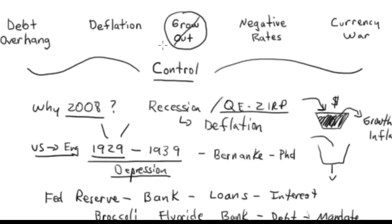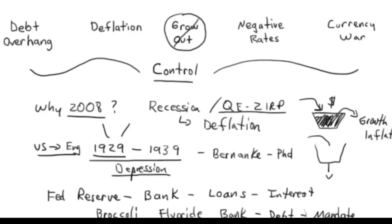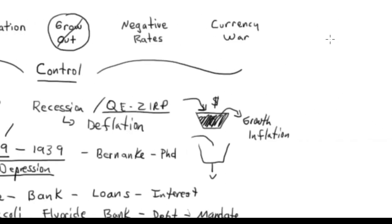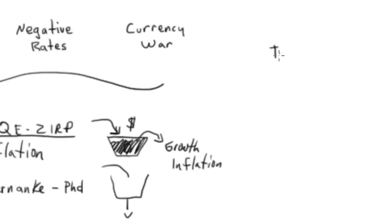So if we have this worldwide debt overhang — not just focused on the United States but the worldwide debt overhang — let me ask you this question: if you needed a transfusion and you had a choice between getting a transfusion from a healthy patient or a sick patient, which one would you choose?